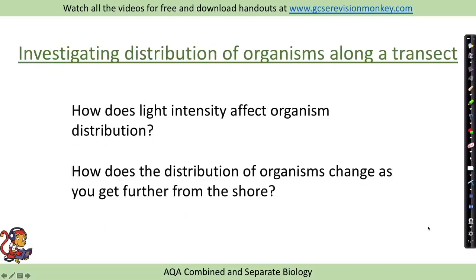Another way we could sample the distribution of organisms is using a transect. So for this, we might be asked questions such as, how does light intensity affect organism distribution?